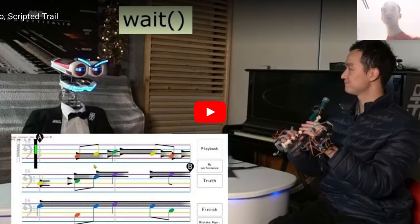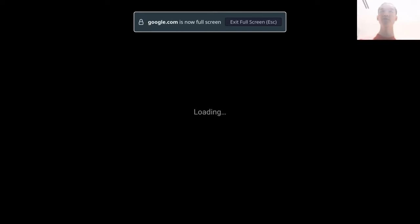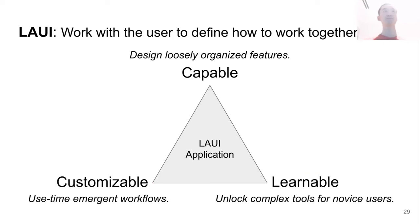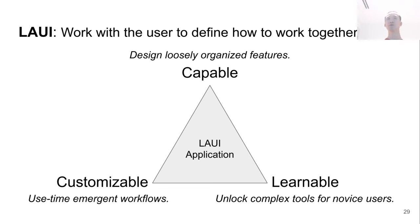In this demo, the latency is removed via scripting. Also, the script is sampled with human guidance. What is the one-liner for LAWI? It works with the user to define how to work together next. We encourage the designer to design loosely organized features, making the application more capable. LAWI allows use-time emergent workflows, giving rise to application customizability. Consequently, LAWI unlocks complex tools for novice users.